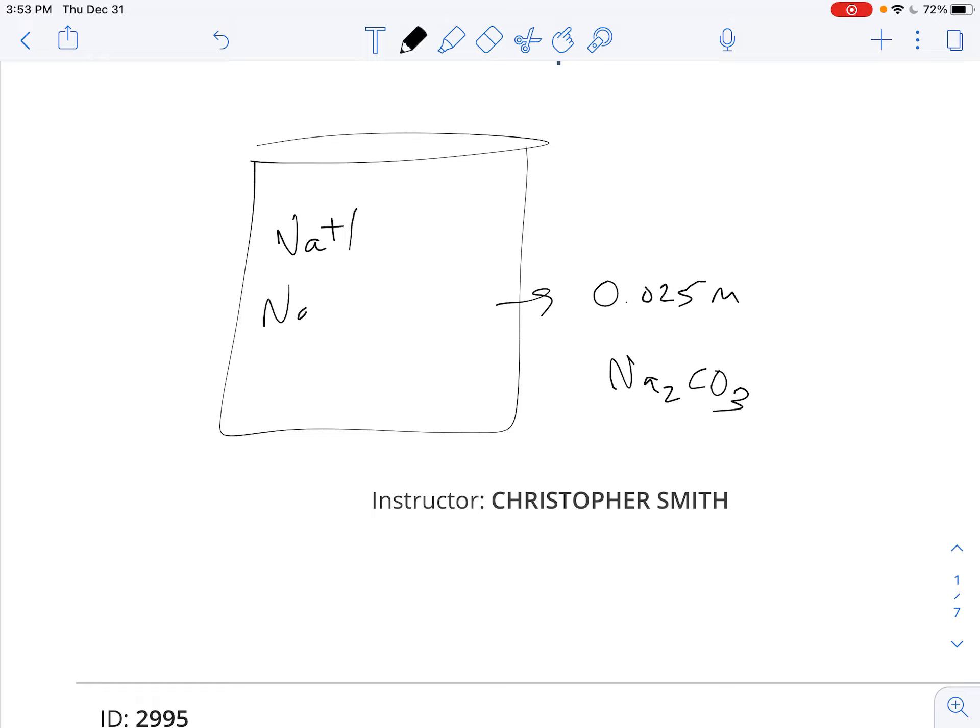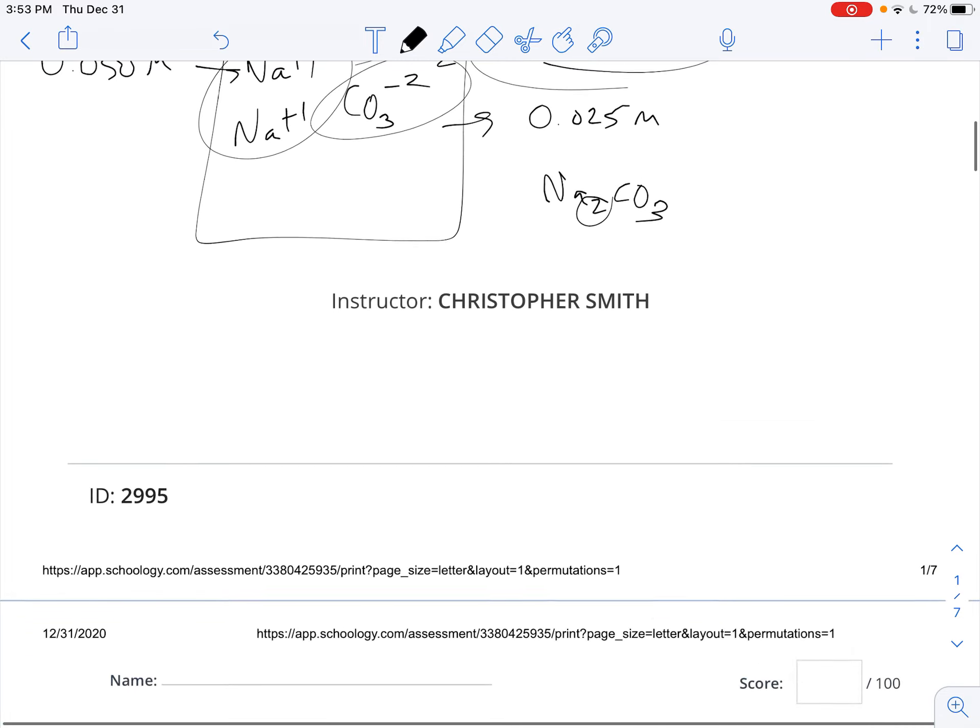That means floating around in this solution, you have two sodiums and you have a carbonate, right? So in reality, you've got 0.050 molar of the sodium, and you've got 0.025 molarity of the carbonate because there's two sodiums and one carbonate.